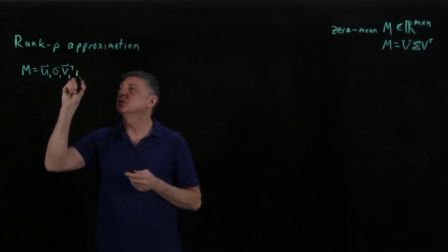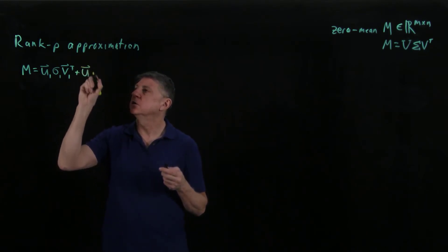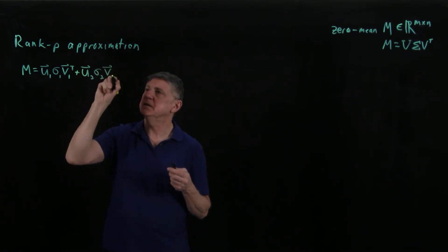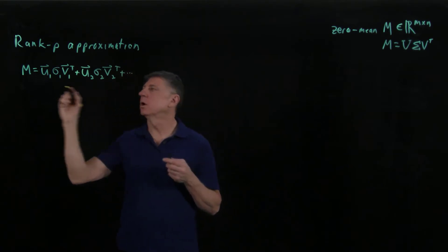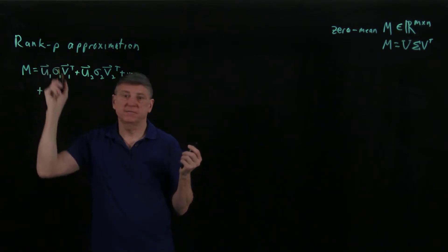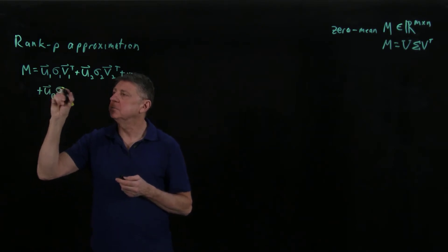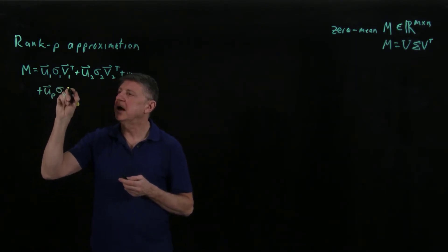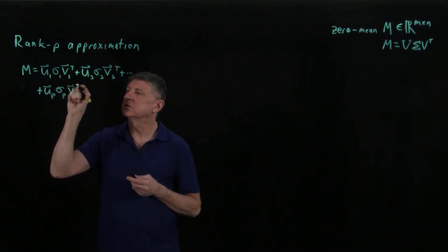If we continue on, we can then get a rank two approximation. So that would be U2, sigma 2, V2 transpose, and so on. And then we would end up at, if we have a rank P approximation, this would be the Pth left singular vector, the Pth singular value, and the Pth right singular vector transposed.